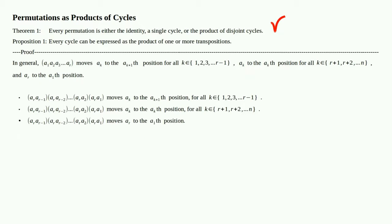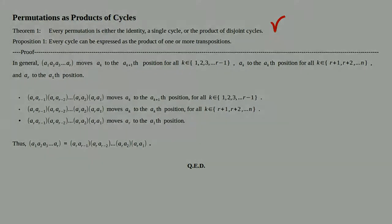Now we have the original cycle and the product of transpositions agreeing on all three points. That means our arbitrary cycle equals that product of transpositions. Since we started with an arbitrary cycle and expressed it as a product of transpositions, we can do this for any cycle — therefore any cycle can be written as a product of transpositions. QED, we're done.